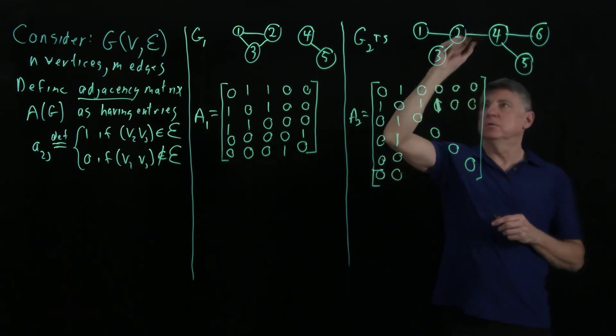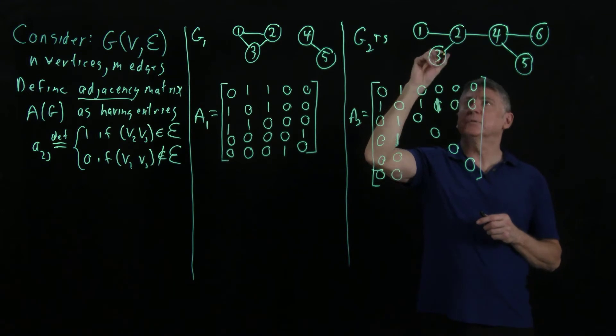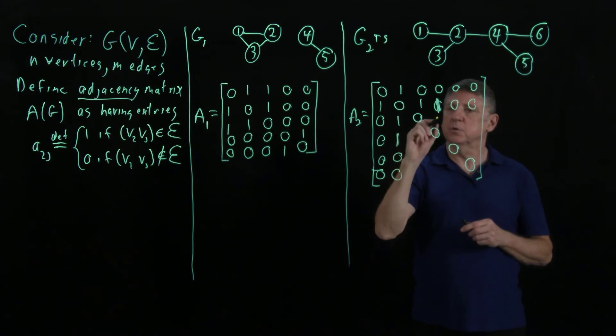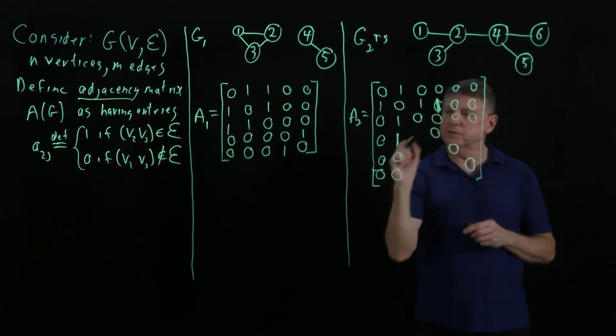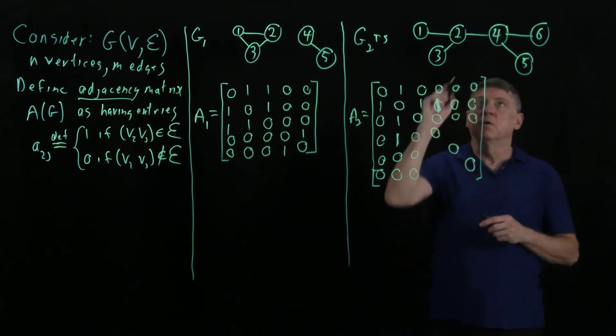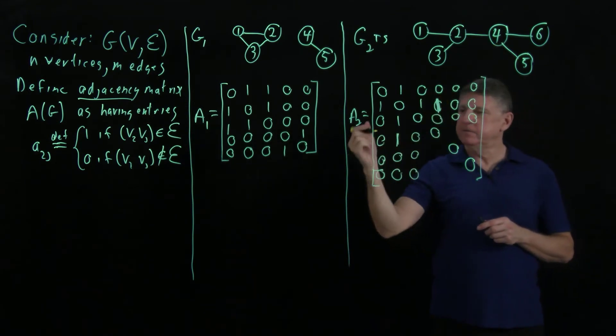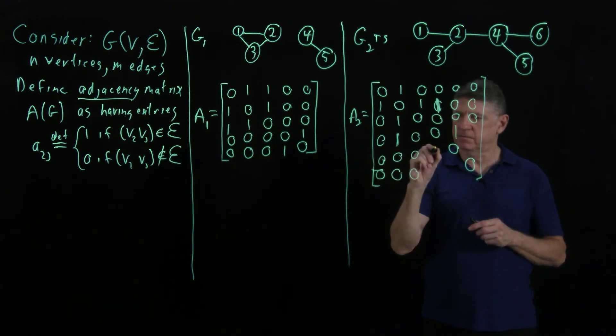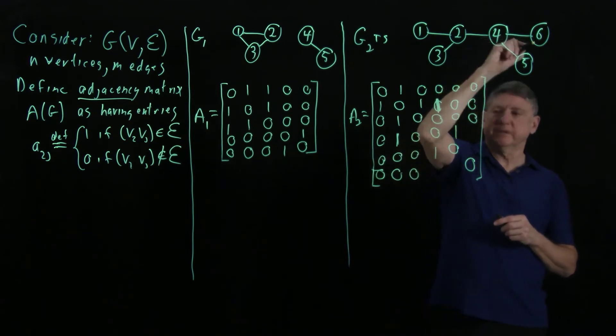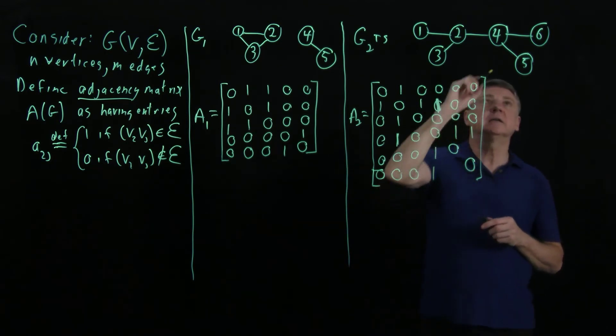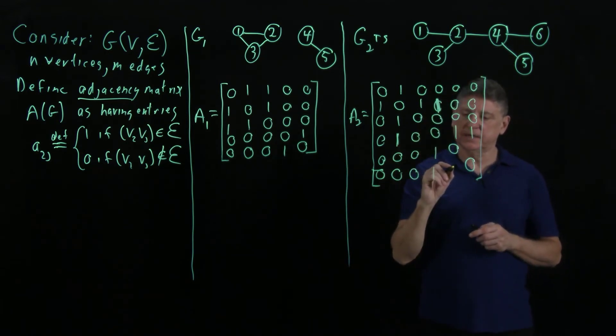Turning to node 3. 3 is connected to 2, which we've noted and not anything else. So we can fill that as zeros. 4 is connected to 5. So 4, 5, and 5, 4. 4 is connected to 6. So that's 4, 6, and 6, 4. And 5 and 6 are not connected.